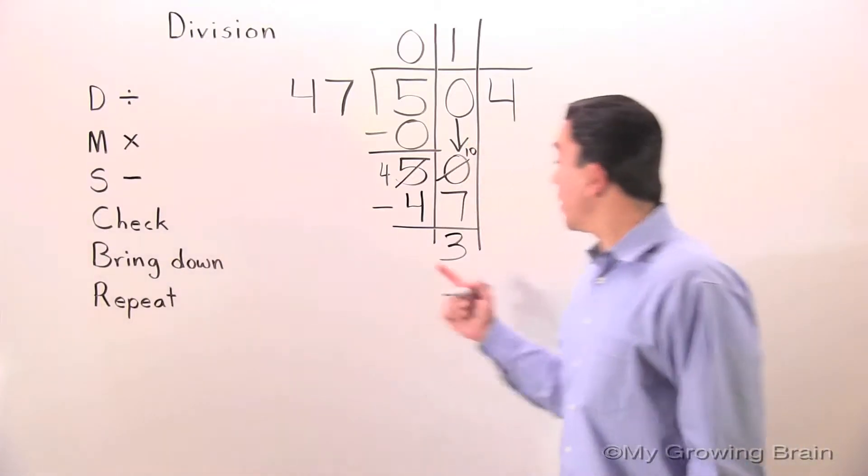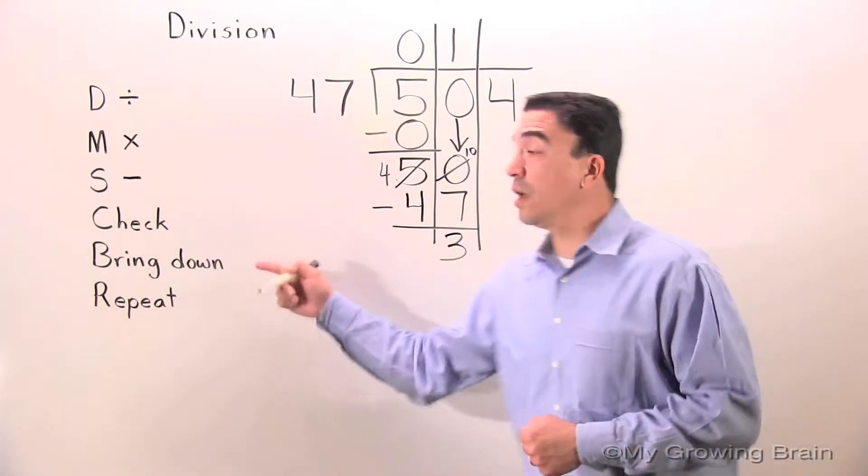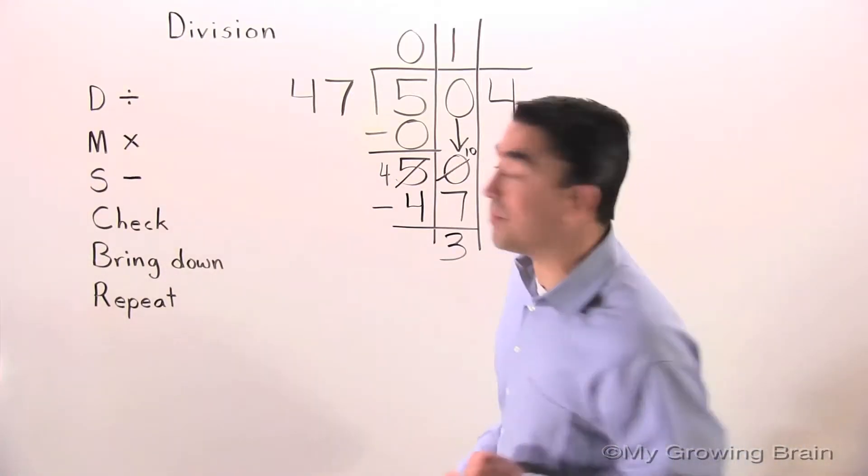Next step, check. 3 is less than 47. Keep on going. Bring down. That's the next step.